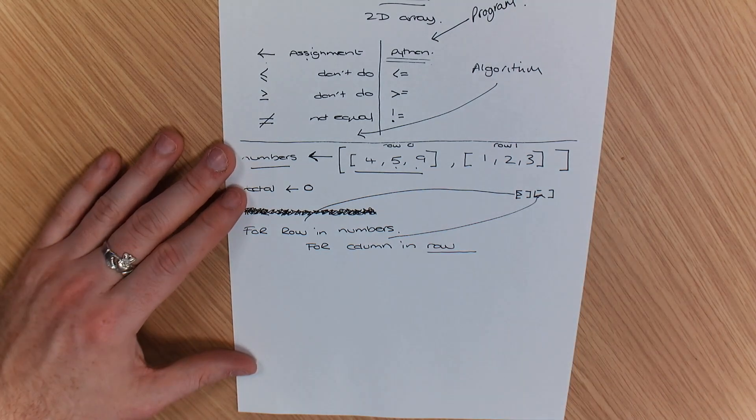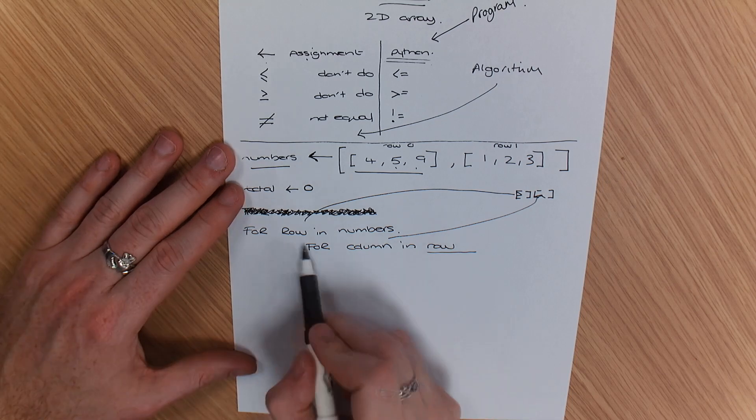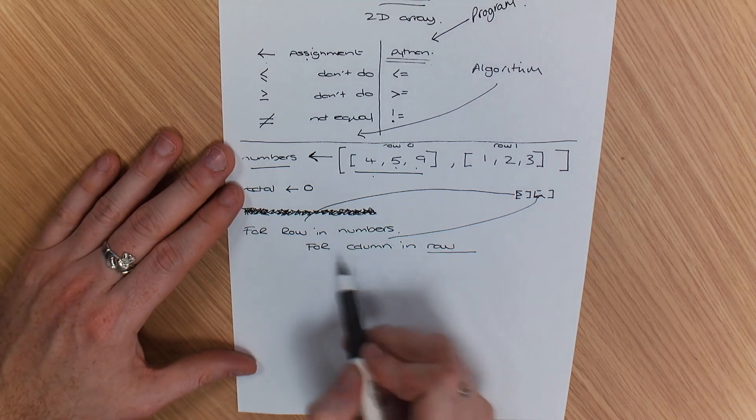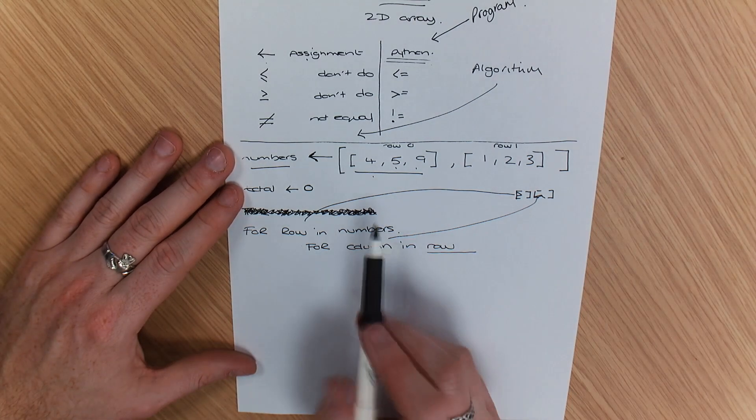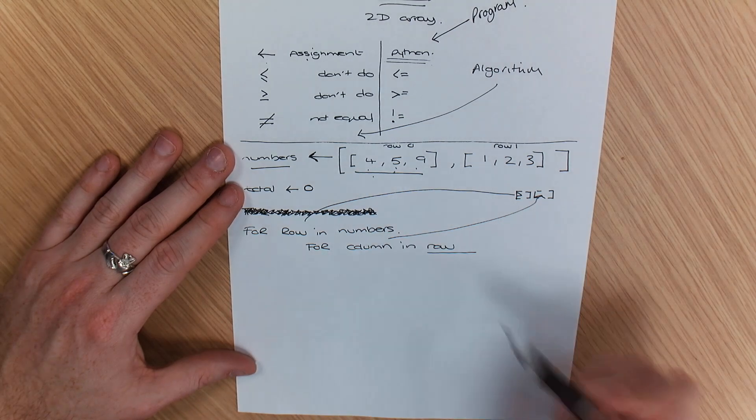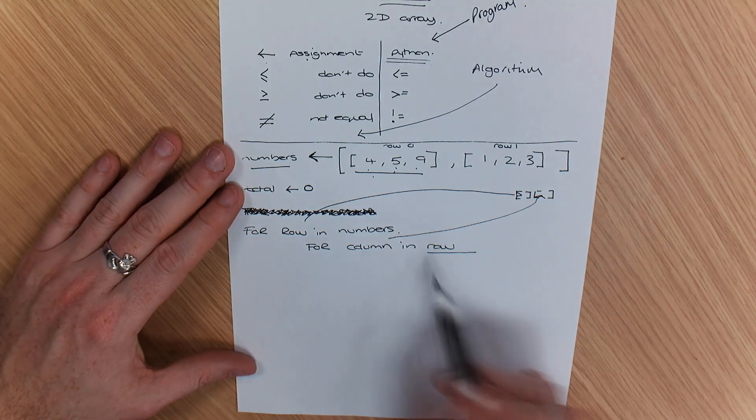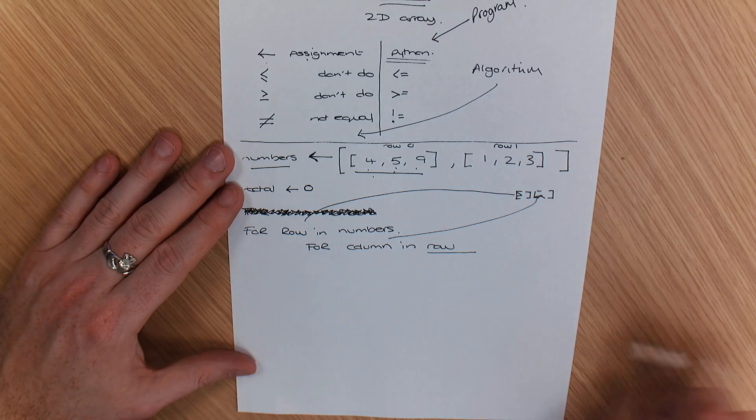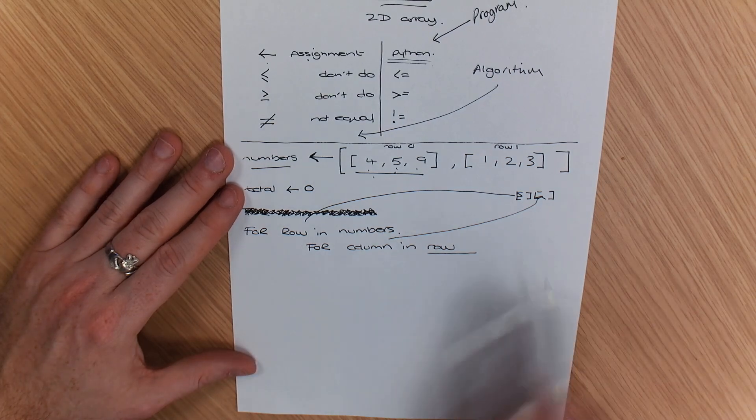That's the best way I can describe it. So we've got for row in numbers, which looks at that one. Now what the column does is it goes through each item in the row. Column in row. That's how I've always written it, and it helps you go through.